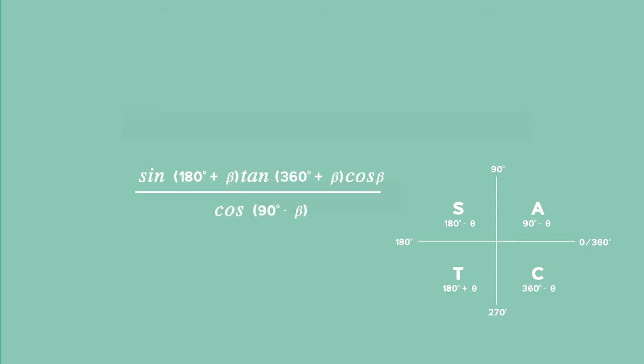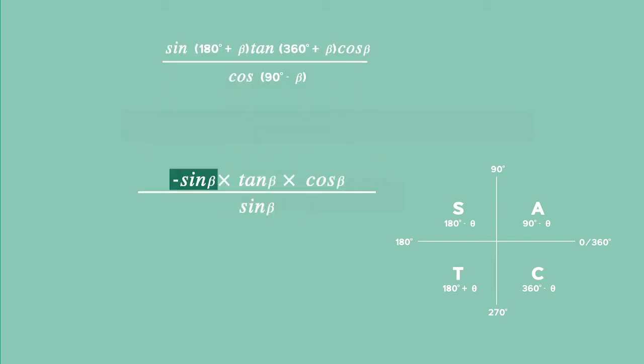So in the numerator we've got sine of 180 degrees plus beta. We first see where that angle falls in the Cartesian plane and we see that it falls in the third quadrant. So that tells us that sine is negative in the third quadrant.